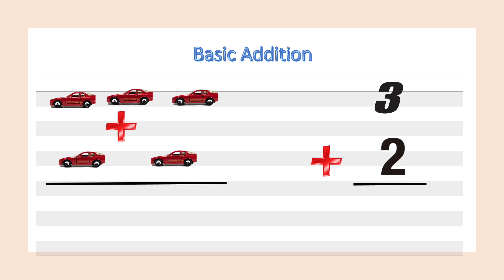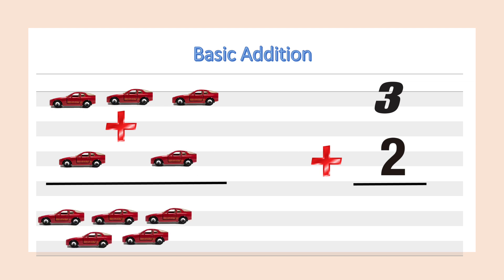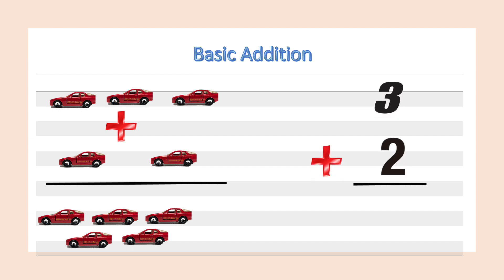Now let's count them all together: one, two, three, four, five. We have five cars all together. The sum of three and two is equal to five.